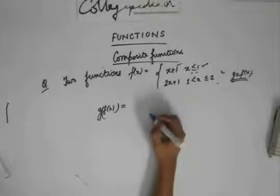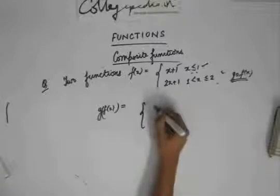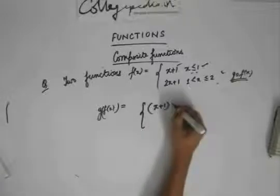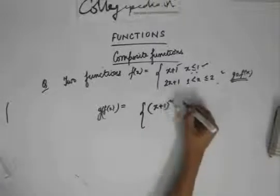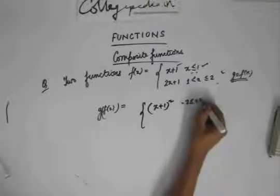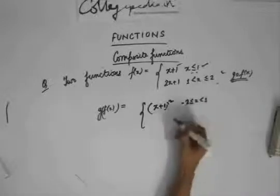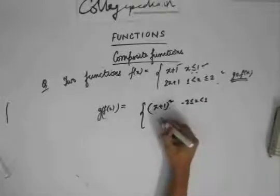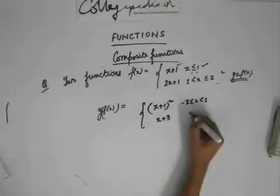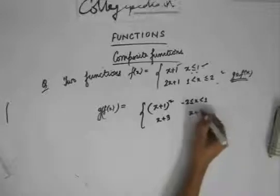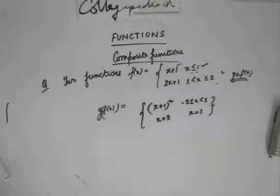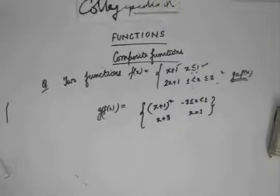The answer to g(f(x)) is: x + 1 when x lies between -2 to 1, and x + 3 when x equals 1. This is how we solve questions on composite functions and find their domain and range.